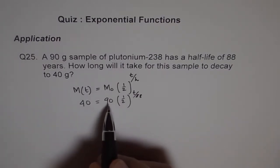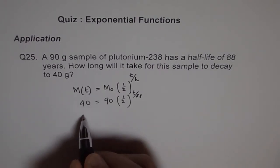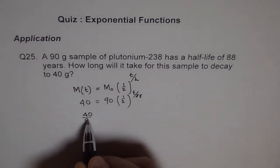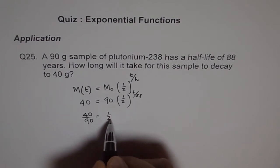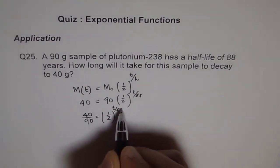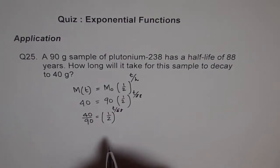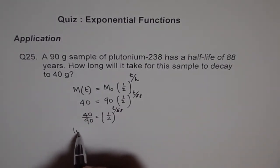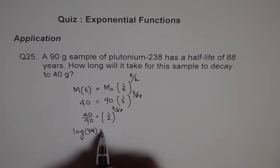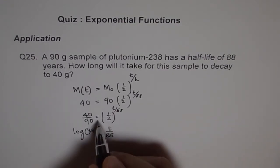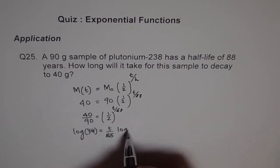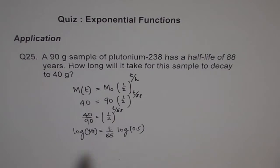So what we can do here, first we have to divide 40 by 90, so you get 40 over 90 equals to half to the power of T over 88. Now you can take log both sides. When you take log, it becomes log of 4 over 9 equals to T over 88. So this comes here, and then log of half. Let me write 0.5 here.